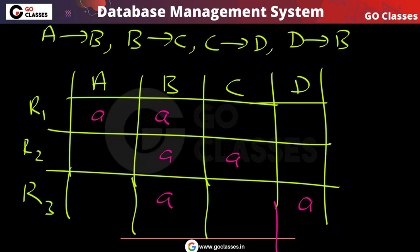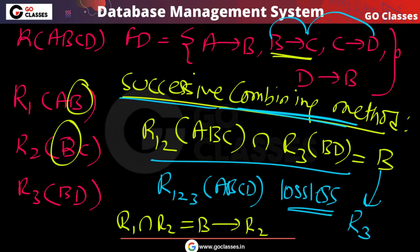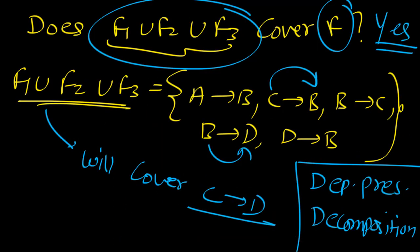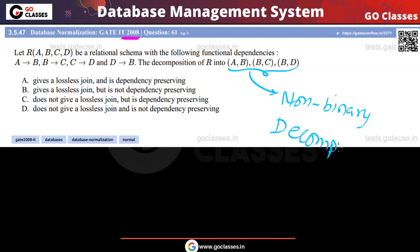This is the chase method, and we also saw the successive combining method. The chase method is better for non-binary decomposition, which is what this question has. Both methods confirm this is a lossless and dependency preserving decomposition. The answer is option A.